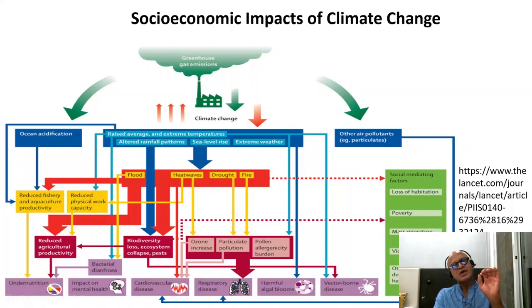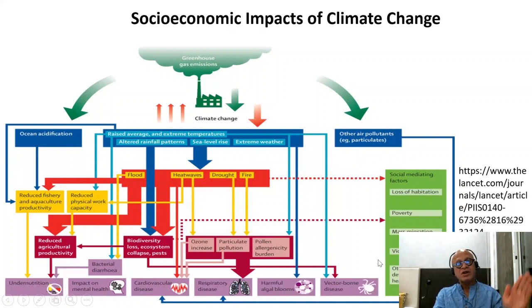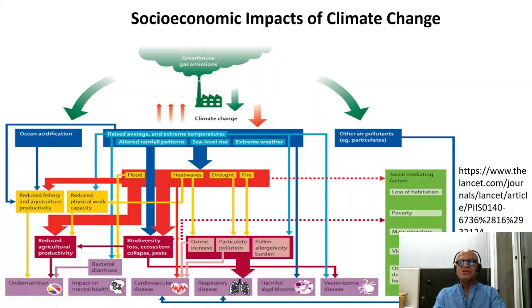Even at the El Niño timescale, El Niño events are found to increase social conflicts. Violent conflicts, of course, require long-lasting droughts, as happened in the Syrian region.